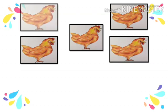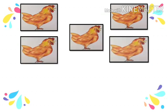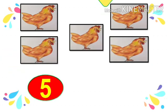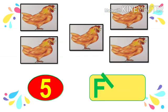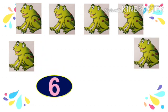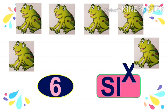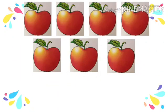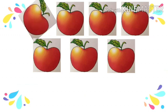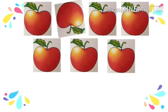Count the number of hands: 1, 2, 3, 4, 5. F-I-V-E, 5. How many frogs you can see? 1, 2, 3, 4, 5, and 6 — six frogs. S-I-X, 6.